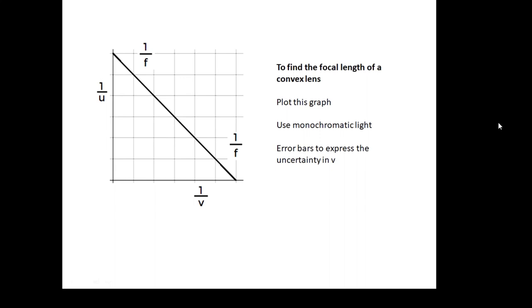This is a better way to find the focal length of a convex lens. If we plot 1 over u against 1 over v, we get a straight line, and there are two intercepts on the y and the x-axis, and they are both equal to 1 over f. So get them both and take an average to get f. If you do this experiment, you plot this graph, use monochromatic light as we discussed before—so use a filter—and we usually do error bars to express the uncertainty in v. v is the image distance, and you can never be sure when it's in focus, so you have a maximum and a minimum value, and then you use error bars on your graph before you do your line of best fit.